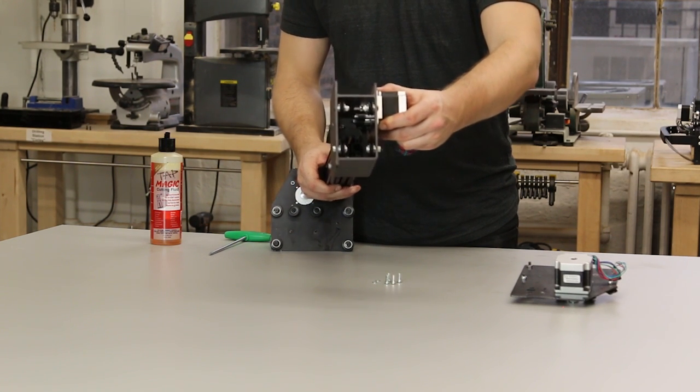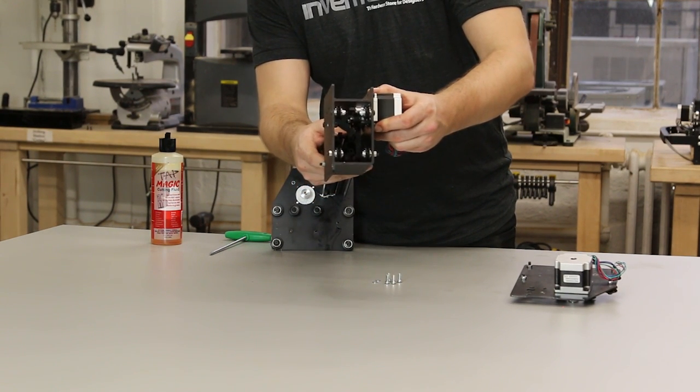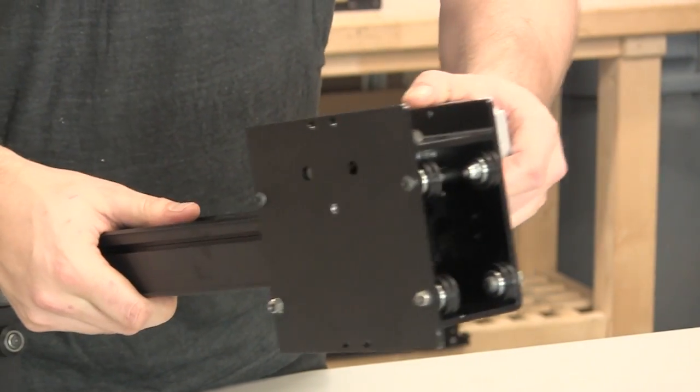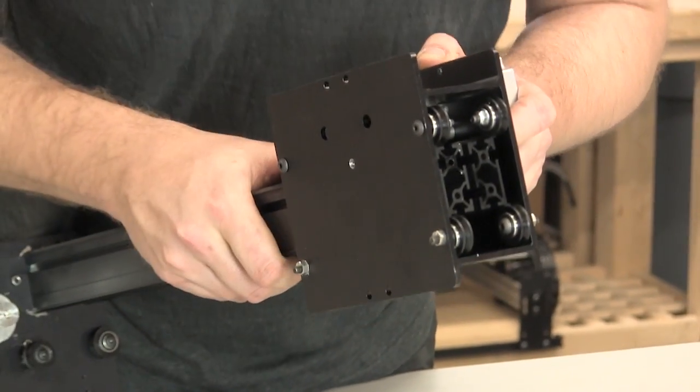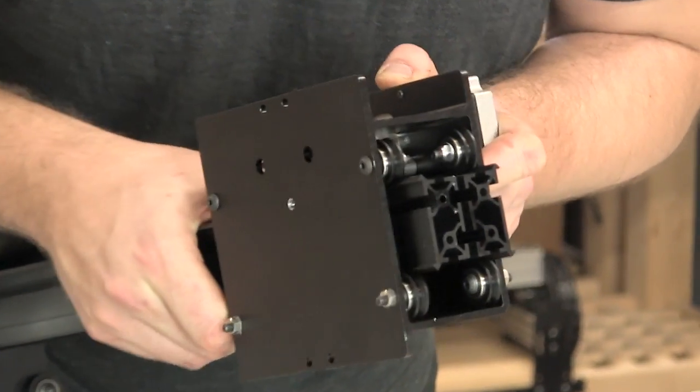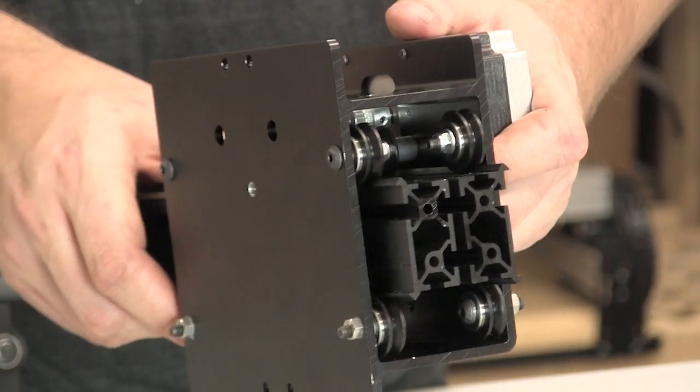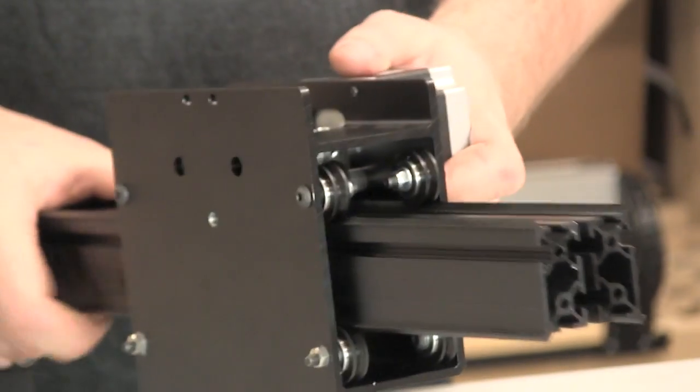And here I'm gently guiding the maker slide onto the V-wheels. No reason to force it at this point. If it doesn't slide easily, check the eccentric nuts on the X-carriage and make sure that the bolt is facing down. This gives you the most clearance between the V-wheels.